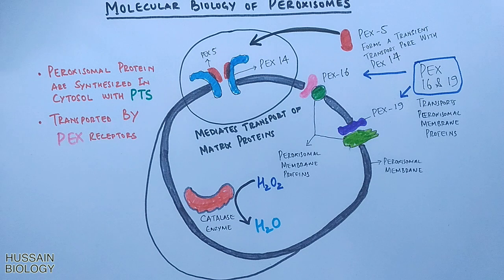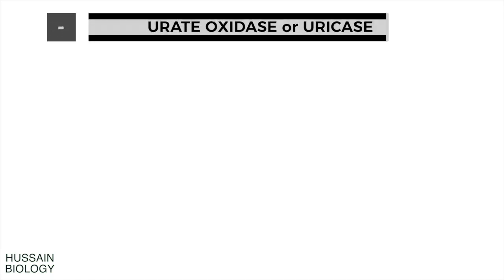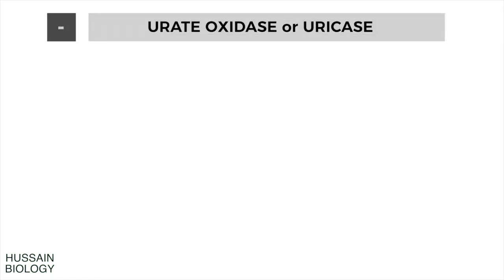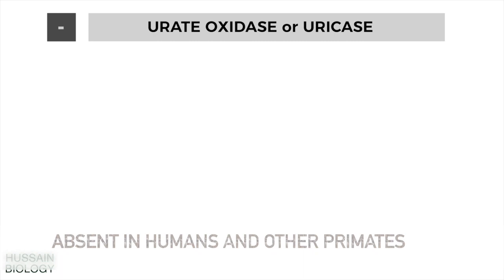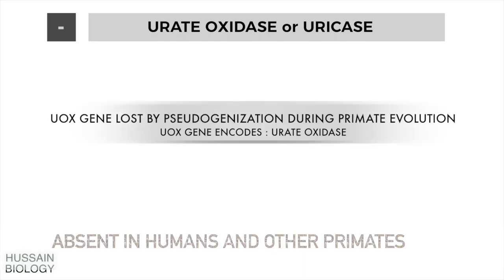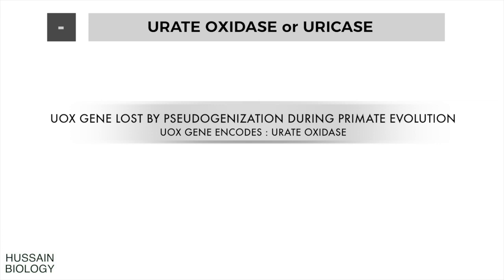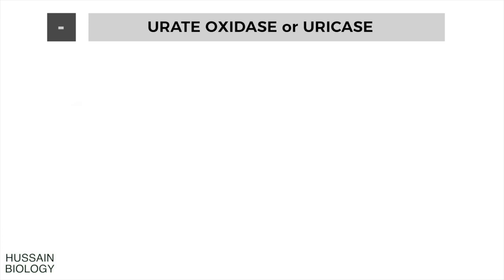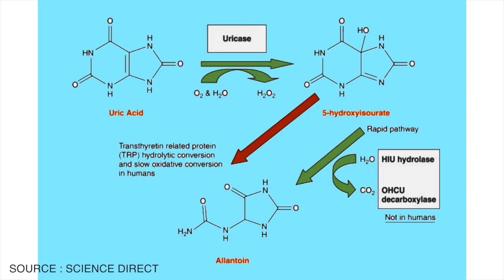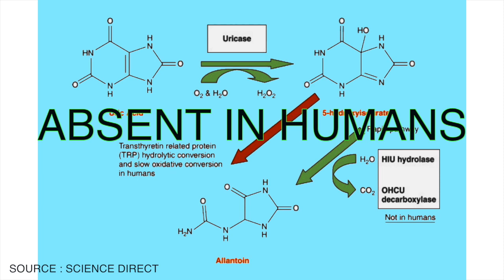Another important enzyme that peroxisomes have is urate oxidase, or uricase. However, this enzyme is absent in humans and other primates, as it was lost during primate evolution. Urate oxidase converts uric acid to 5-hydroxy isourate and further into allantoin through uricolytic proteins, but this pathway is absent in humans and other primates.